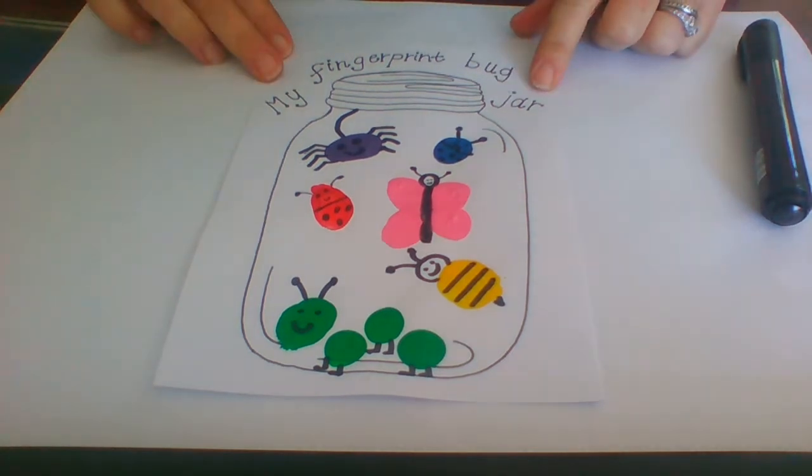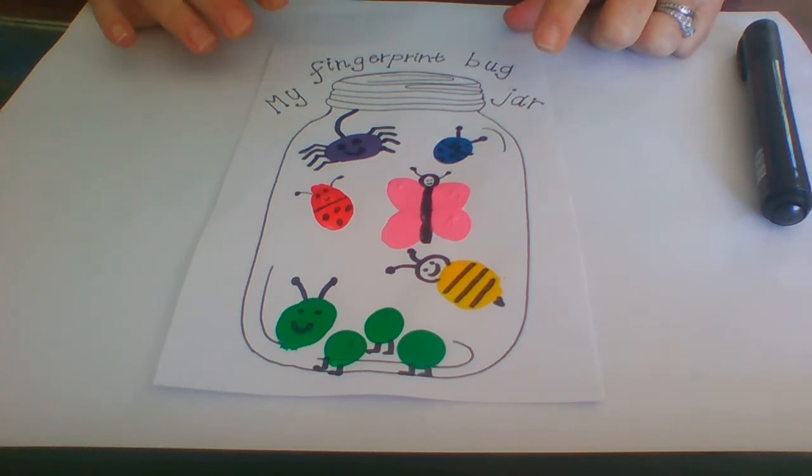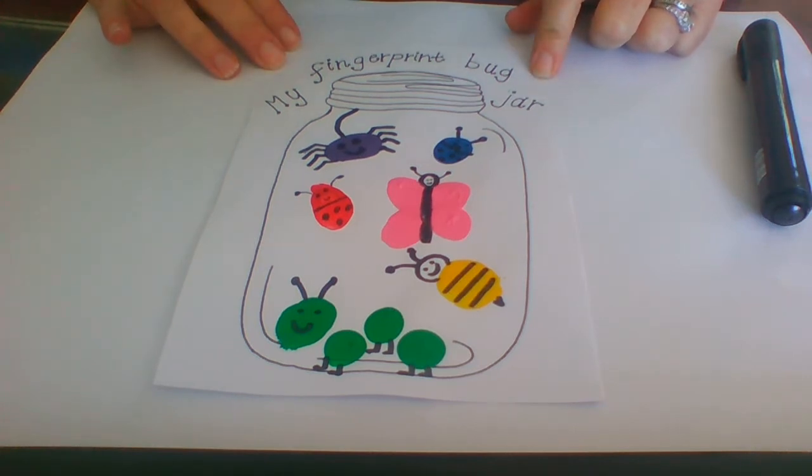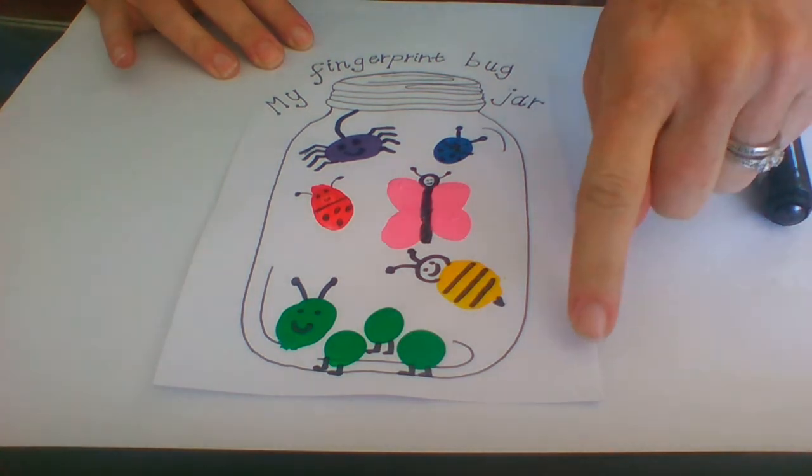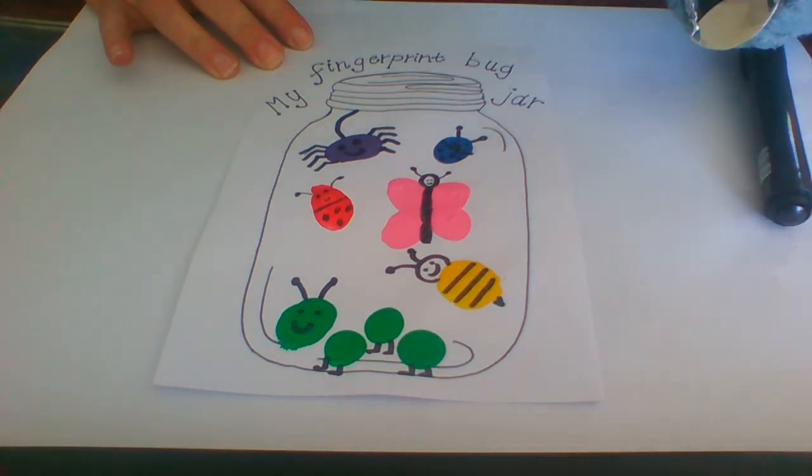So on this piece of paper, well, the piece of paper that I've posted has got two of these jars. So you can make two bug jars and make them different bugs. You could even do like a little snail on the outside who's run away. Anything you want. Just have fun. It's all about having fun with our bugs.